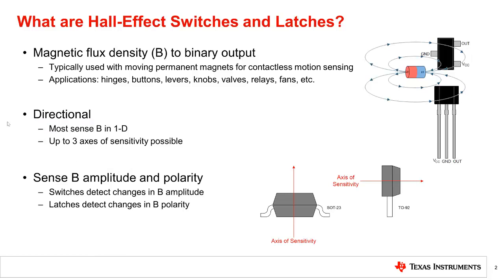We start with an overview of the basic concepts. Hall effect switches and latches are a class of Hall effect magnetic sensors that convert a magnetic flux density signal, commonly known as the B-field, to a one-bit digital output. These devices are typically used with permanent magnets to enable contactless motion sensing applications.